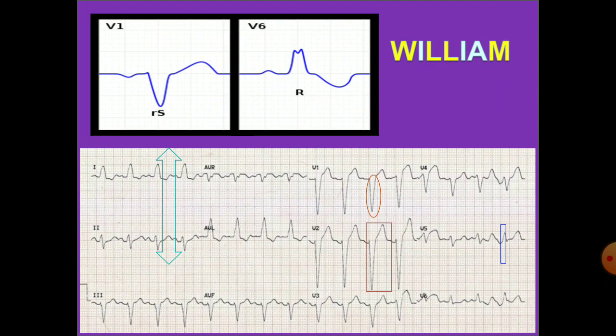In the ECG shown, you can notice the broad QRS complex highlighted in the red circle. In the red rectangle you can see appropriate discordance — ST and T are going in the opposite direction to the main vector of the QRS complex. This means QRS is in negative deflection and ST-T is in positive deflection. Poor R wave progression in chest leads can also be noticed.